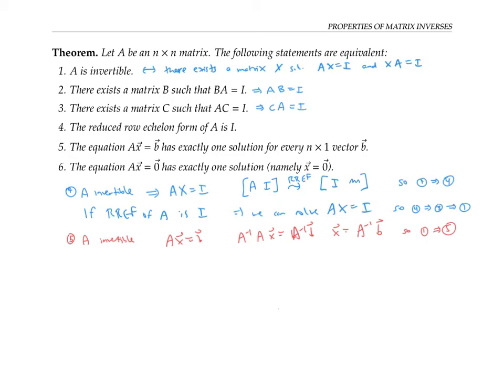On the other hand, going the other direction, if Ax equals b always has a unique solution, then when we row reduce any matrix like this, then we end up having A in identity form.